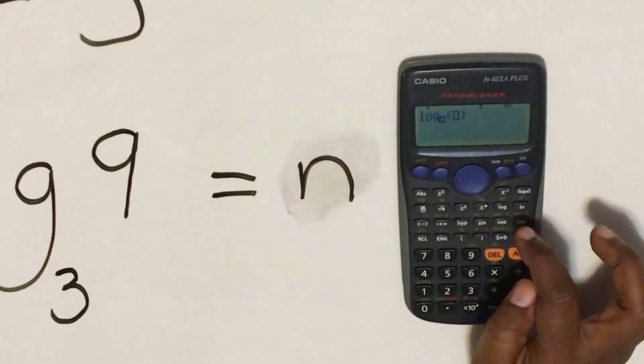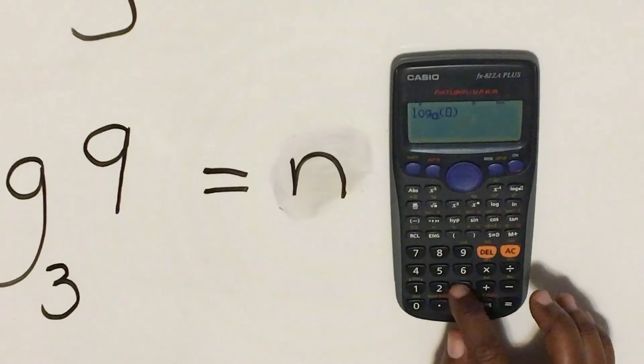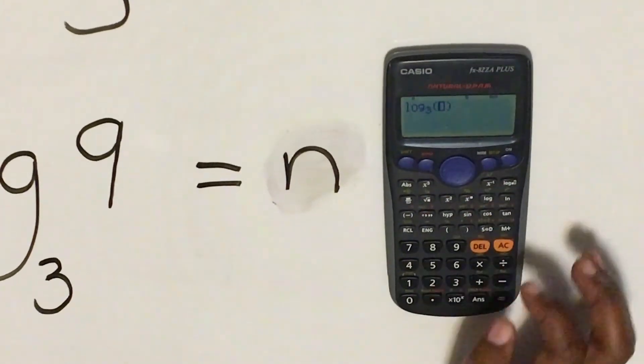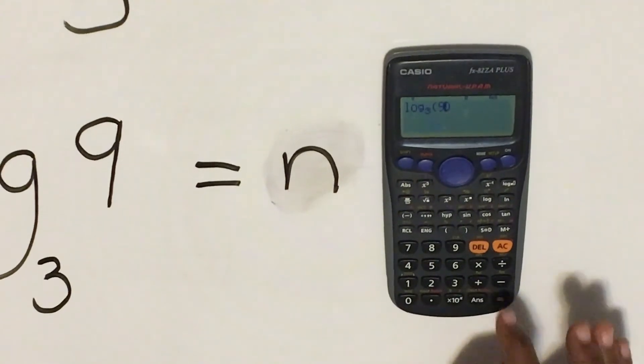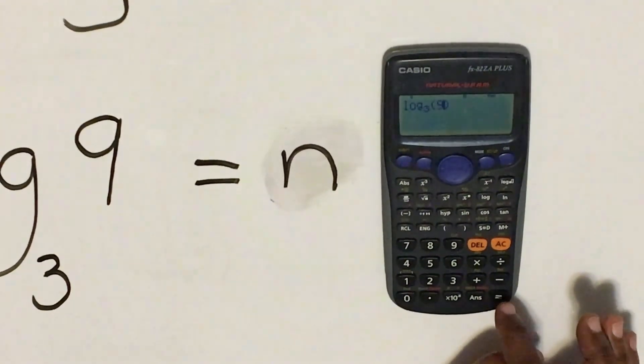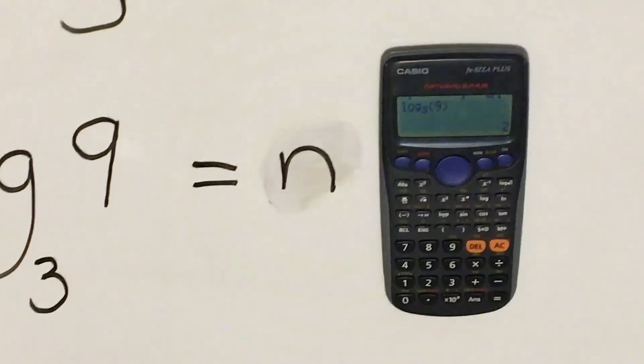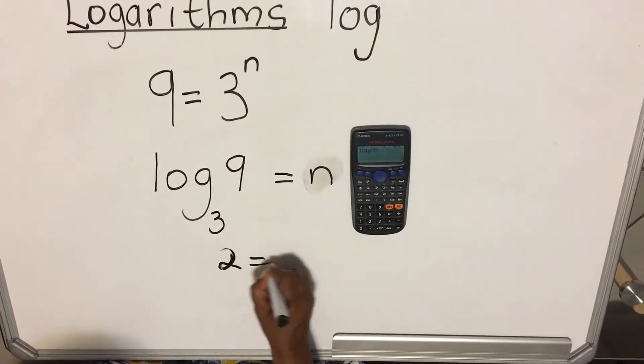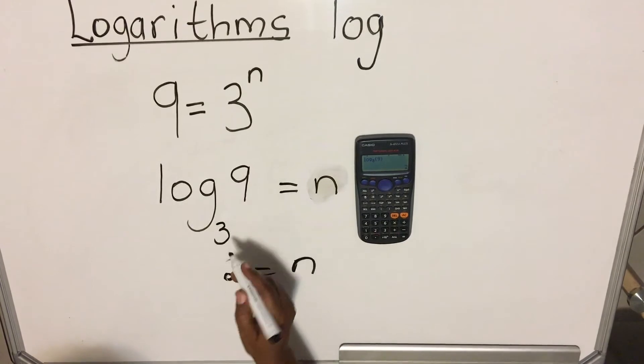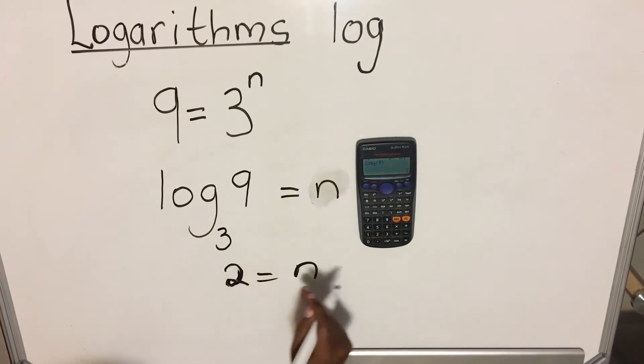Our base is 3, so we're going to put our base 3. And then the number that is next to the log is 9. So we expect our answer to be 2. It is 2. So it means 2 is equal to n. This whole thing is equal to 2.